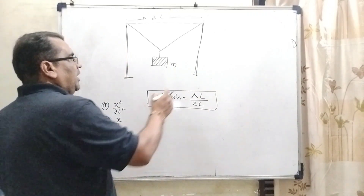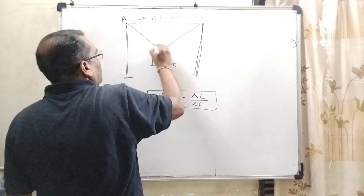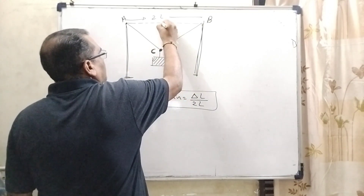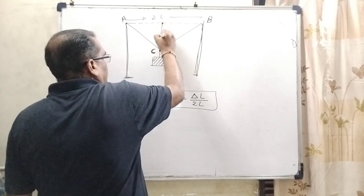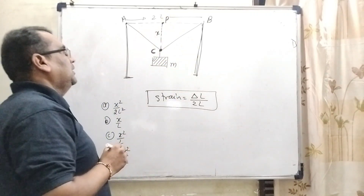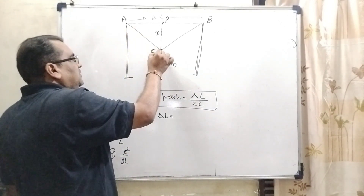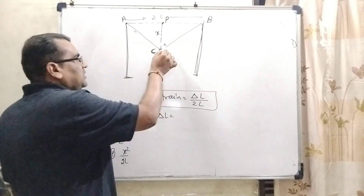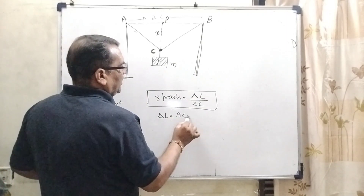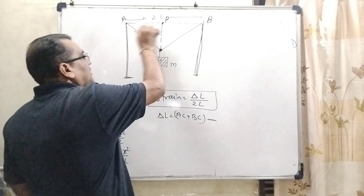Before starting the explanation, we have to label this diagram. Let us consider this point is A, this is B, and this is C. Joining this middle point — the distance is X and the point is P. So here ΔL can be written as distance AC plus BC, because it is extended due to the weight of this block. So: AC + BC − AB.